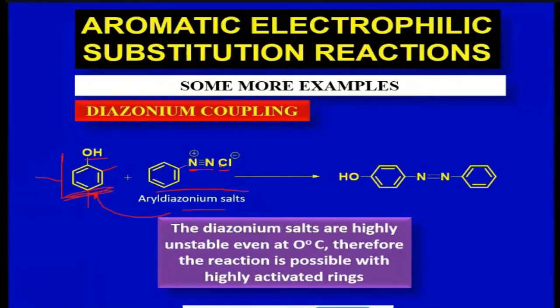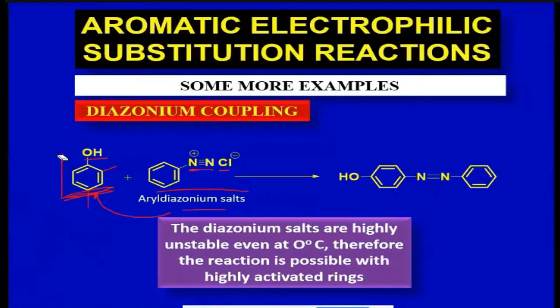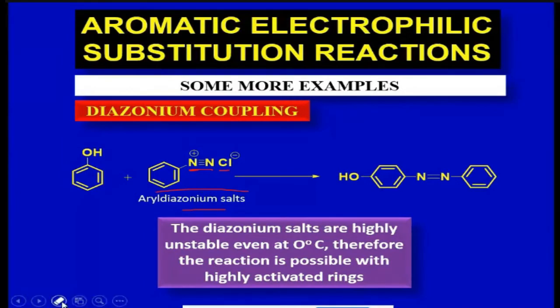This aryl diazonium salt acts as an electrophile—you can see the positive charge density here—so from the nitrogen position it will be attacked by the benzene ring. It can be attacked from the ortho or the para position of this benzene ring. Usually the reaction proceeds at para position.